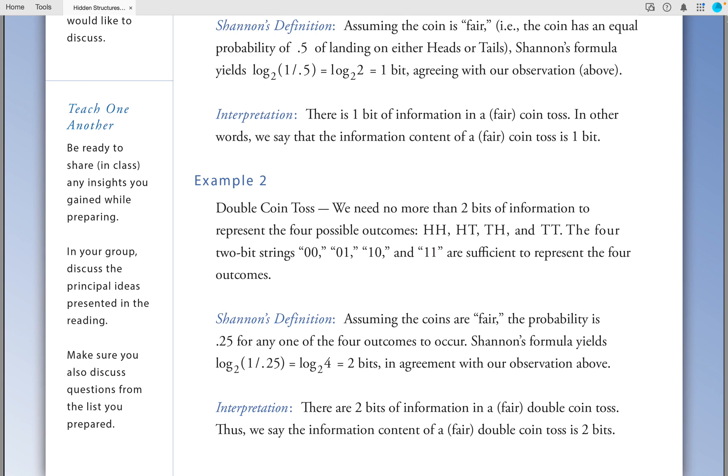Example 2: Double coin toss. We need no more than two bits of information to represent the four possible outcomes of heads-heads, heads-tails, tails-heads, or tails-tails. The four two-bit strings 00, 01, 10, and 11 are sufficient to represent the four outcomes. Shannon's definition: Assuming the coins are fair, the probability is 0.25 for any one of the four outcomes to occur. Shannon's formula yields log base 2 of 1 divided by 0.25, which is equal to log base 2 of 4, which is equal to two bits.